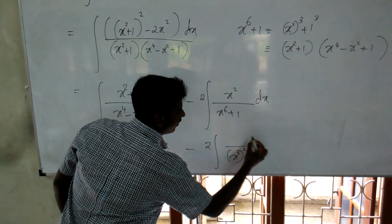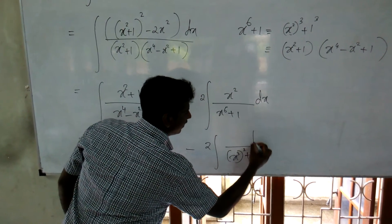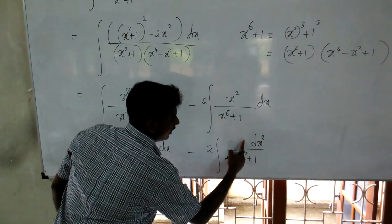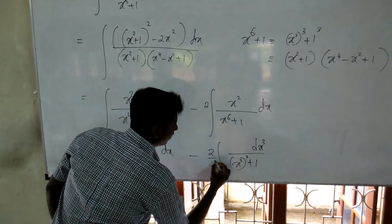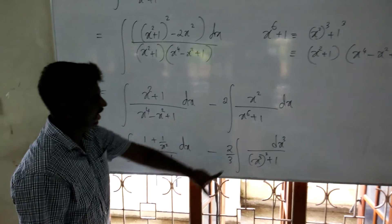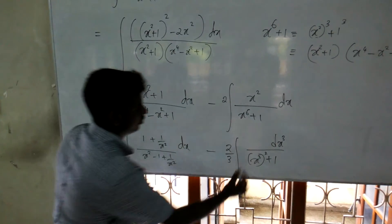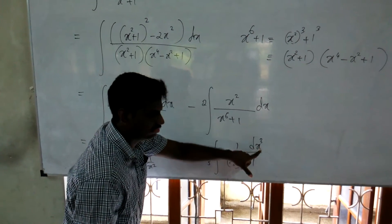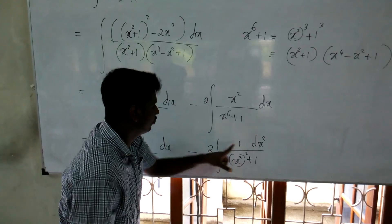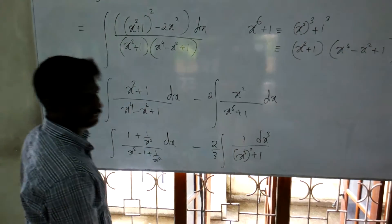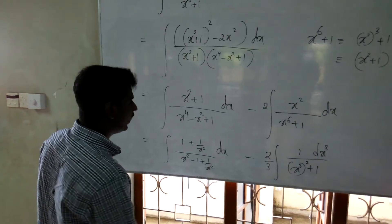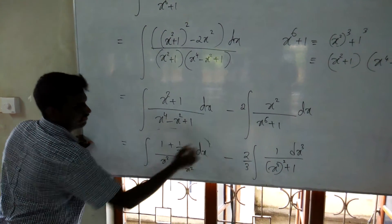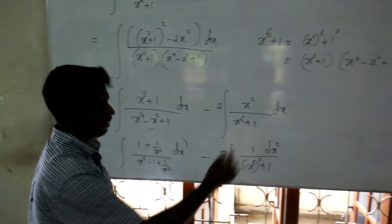For the second integral, you can write d(x³) — since d(x³) = 3x² dx — so the x² cancels out. Now I am going to handle both integrals.